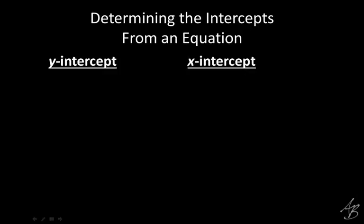Real quick, let's review what we talked about yesterday. We're talking about this thing called intercepts. What's an intercept? A crossing of the line. So it's where a line crosses another line — and specifically what other line? The X-axis. So it's where a line crosses the X-axis or the Y-axis.